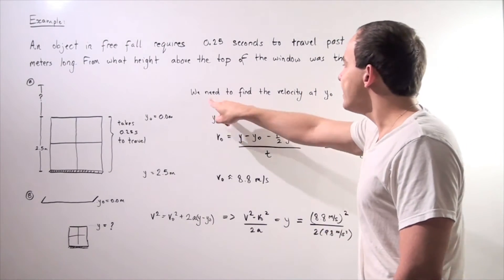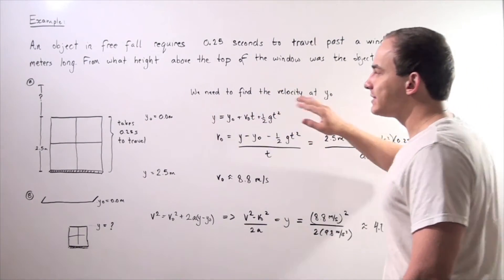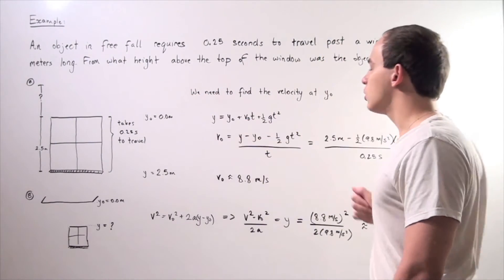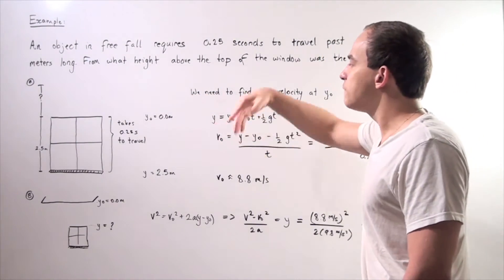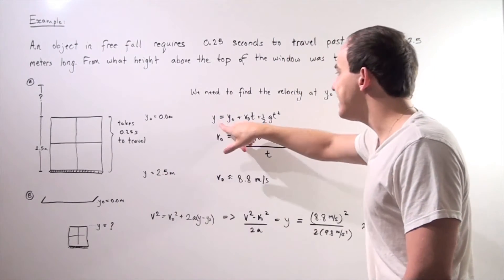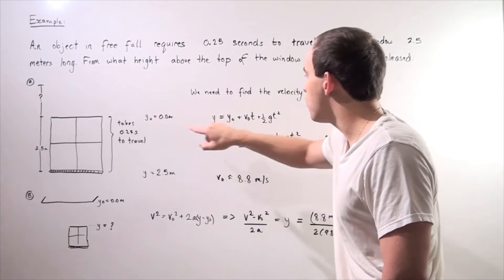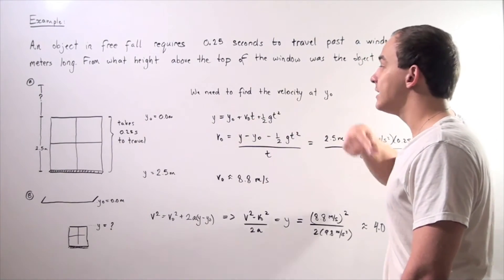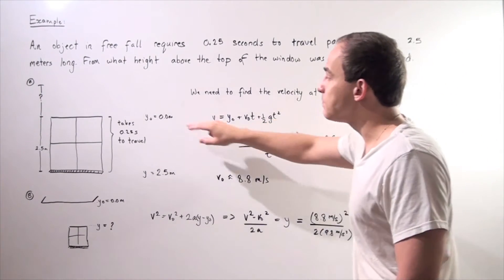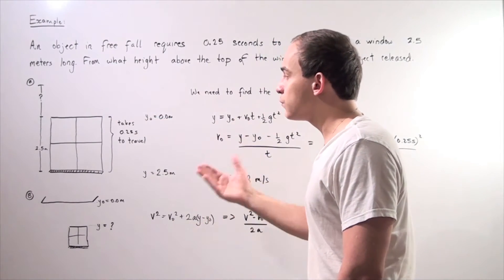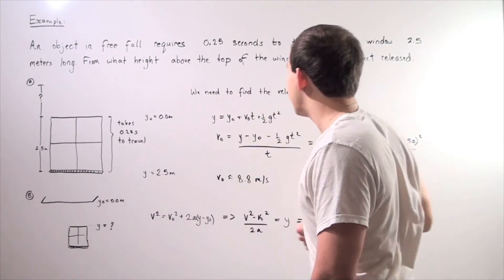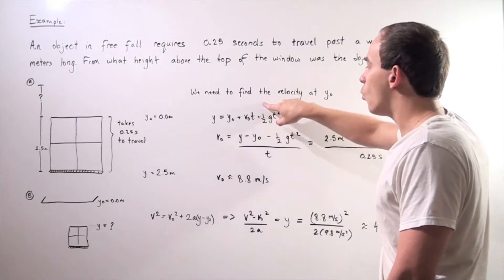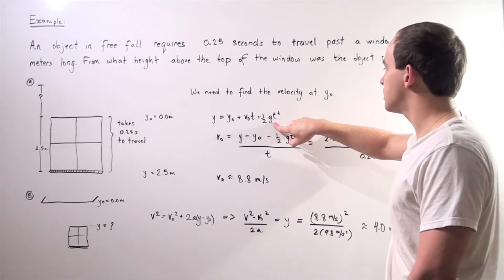So we need to find the velocity at this point. Let's use the following equation. We have our final position at this point equals the initial position at this point plus our initial velocity, which is what we want to find, multiplied by the time it takes our object to fall this distance 2.5 meters given this initial velocity, plus 1/2 times our gravitational constant g times time squared.